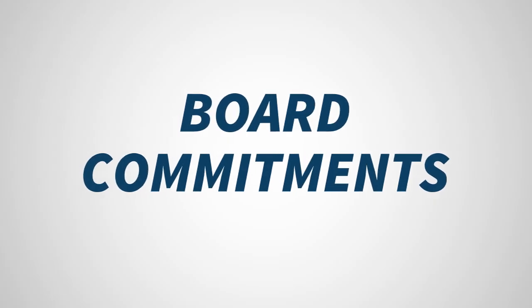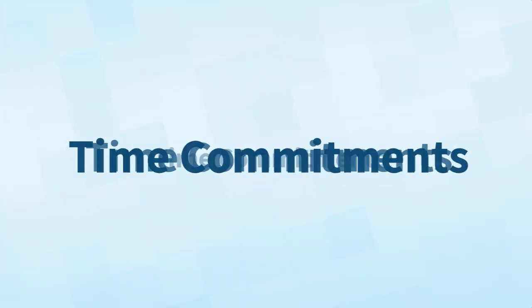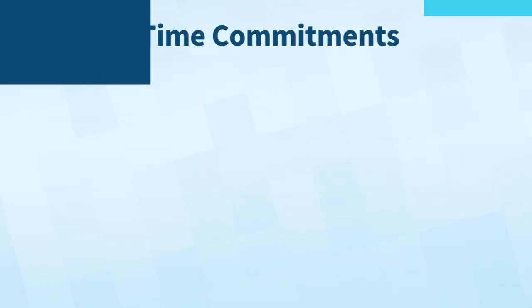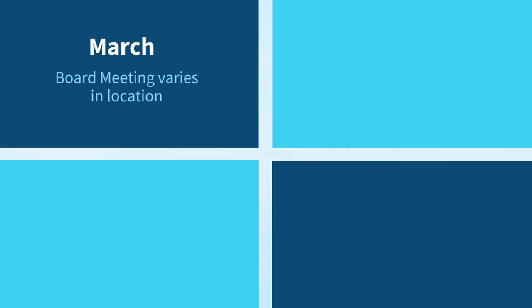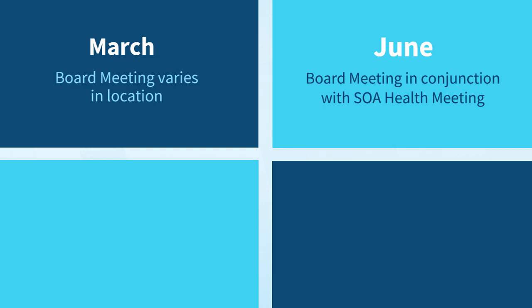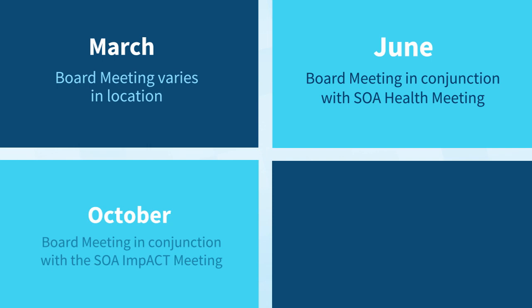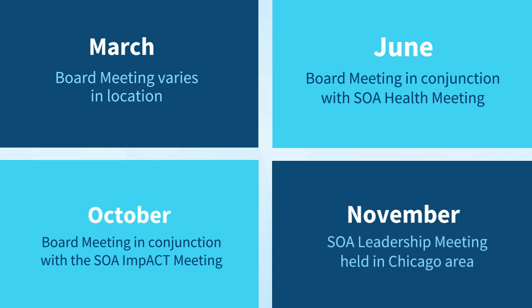What am I getting myself into? Like any SOA volunteer, it does take some time. There are four board meetings a year. There's one in March, and that varies in location every year. There's a June board meeting in conjunction with the SOA health meeting. There's an October meeting held in conjunction with the SOA impact meeting and exhibition. And then in November, there's an SOA leadership orientation meeting in Chicago where the board also gathers. There could be some additional short virtual meetings throughout the year.